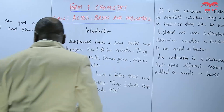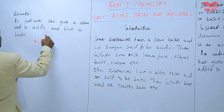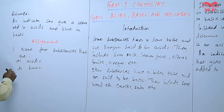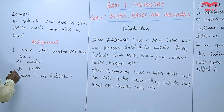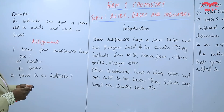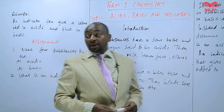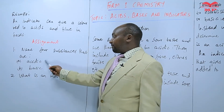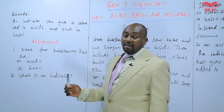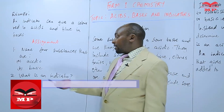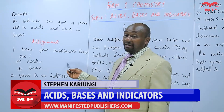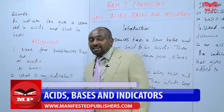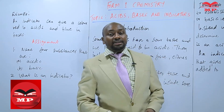You'll have an assignment at this point. The first question: name four substances that are acidic that we encounter every day, and four substances that are basic that we encounter every day. Number two: what is an indicator? So we're going to stop there until next time. Goodbye.